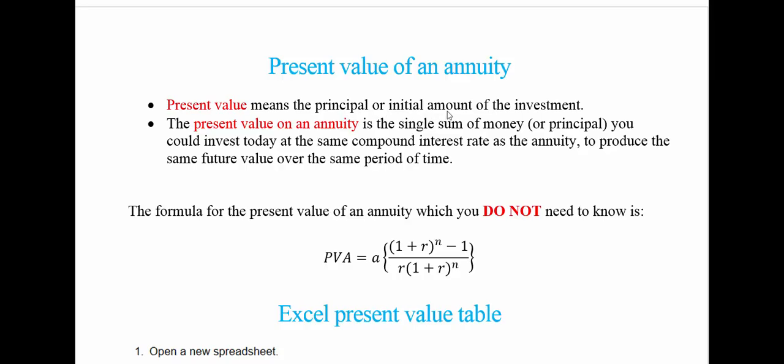So the present value means the principal or the initial amount of the investment, and the present value of annuity is a single sum of money or principal that you could invest today at the same compound interest rate as the annuity to produce the same future value over the same time period.